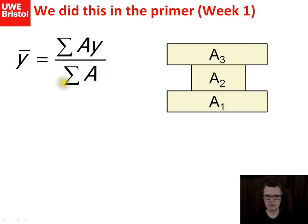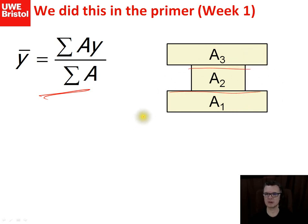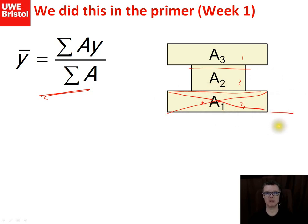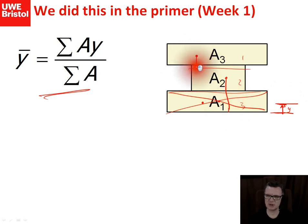To apply this formula, I split my rectangles into convenient shapes - the most convenient way is to make horizontal lines across the intersections. I've got area one, area two, area three. For each area I multiply it by its centroid, finding the middle and measuring it from a reference point. We always take that to be the base of our beam - it's the distance from the base to that centroid location.